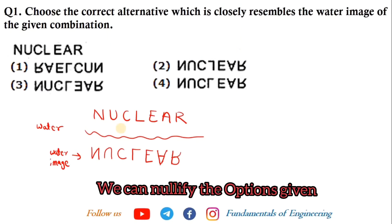Among the four options for NUCLEAR, the first option has the position changed, so it is wrong. The second option shows L in the wrong position, so it is incorrect. The third option shows E given as a mirror image, so it is wrong. Only option four is correct.